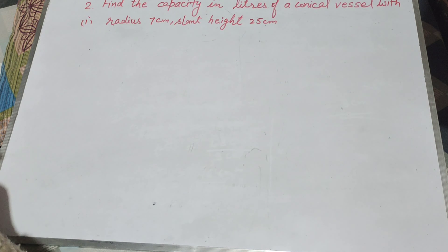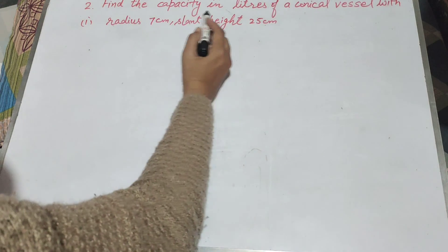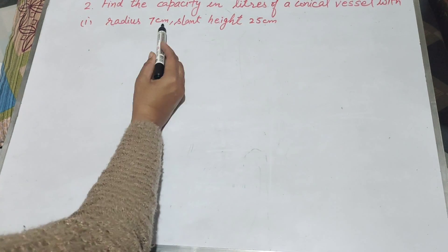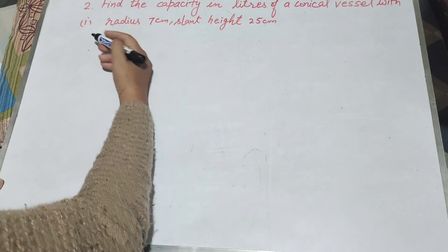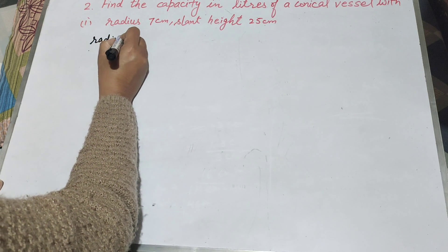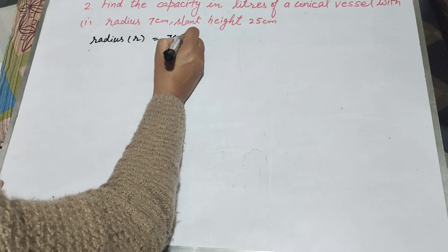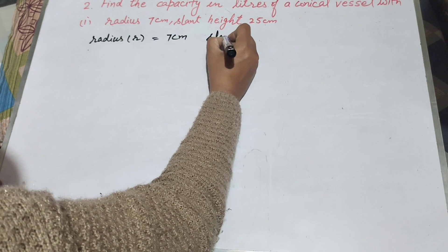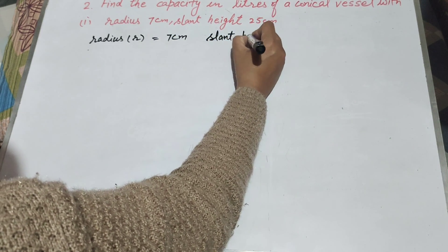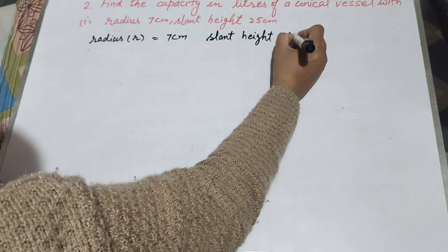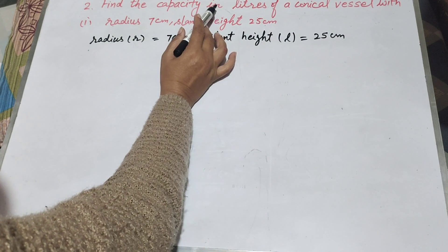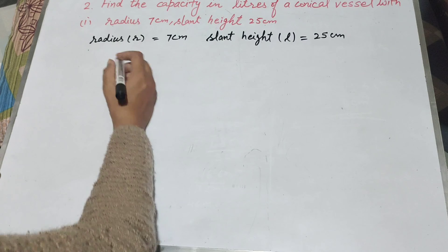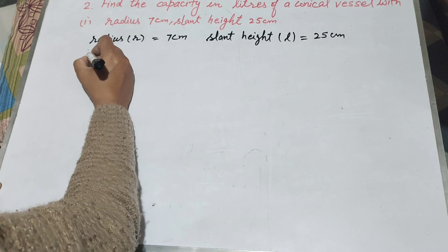Hello friends, welcome to my channel. In this video we discuss question number 2: find the capacity in liters of a conical vessel with radius 7 centimeter and slant height 25 centimeter. Given is radius r equal to 7 centimeter and slant height l equal to 25 centimeter. To find capacity we need to find its volume, and to find volume we need first its height.